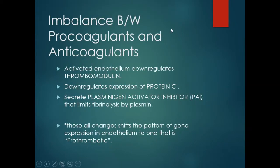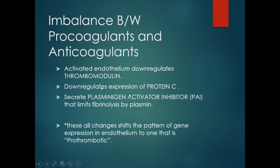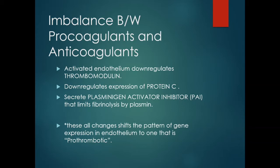The prothrombotic effects include: activated endothelium downregulates thrombomodulin, which is an antithrombotic anticoagulant. Endothelium also downregulates and reduces expression of protein C, which is the proteolytic enzyme that removes clotting factors and inhibits the clotting pathway. It also secretes plasminogen activator inhibitor (PAI), which inhibits tissue plasminogen activator — the enzyme that activates plasmin. So PAI decreases plasmin concentration, limits fibrinolysis, and leads to a prothrombotic effect. These changes shift gene expression in the endothelium to a prothrombotic pattern.